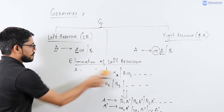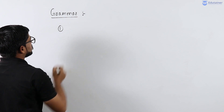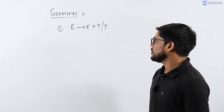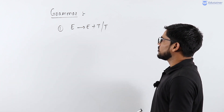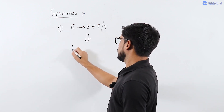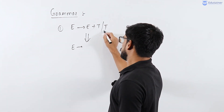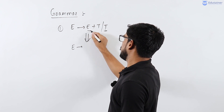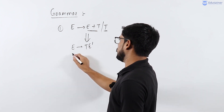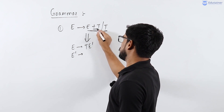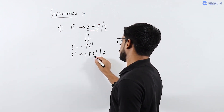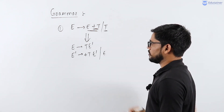Let us take a first example. The grammar E derives E plus T or T is a left recursive grammar. To convert it into right recursive grammar: E derives T followed by E dash, and E dash derives plus T followed by E dash, or epsilon. This is the resultant right recursive grammar for this left recursive grammar.